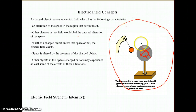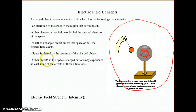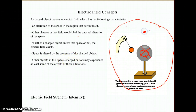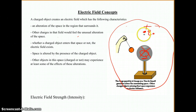But when we turn the Van de Graaff on and start building up a charge Q on the ball, it's going to start to alter the area around it. Other objects in this space, charged or not, may experience at least some of these alterations. If we have a small test charge Q0, and the charge on the Van de Graaff is negative while the test charge is positive, then it's going to feel a force that actually pulls it toward the Van de Graaff, and something might stick.